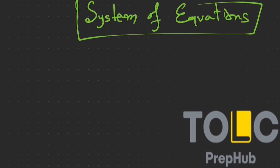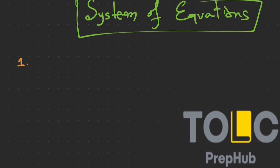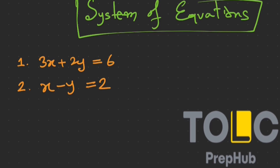In this tutorial we are going to talk about system of equations. To understand the meaning of system of equations, let's write two equations. Equation number one: 3x plus 2y equal to 6, and equation number two: x minus y equal to 0. A system of equations is a collection of two or more equations that involve the same variables.